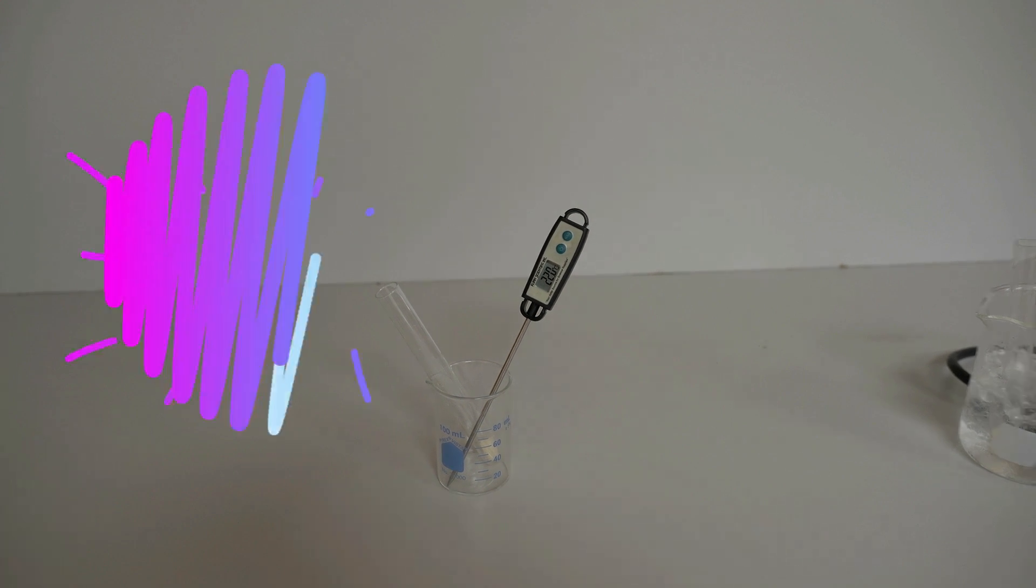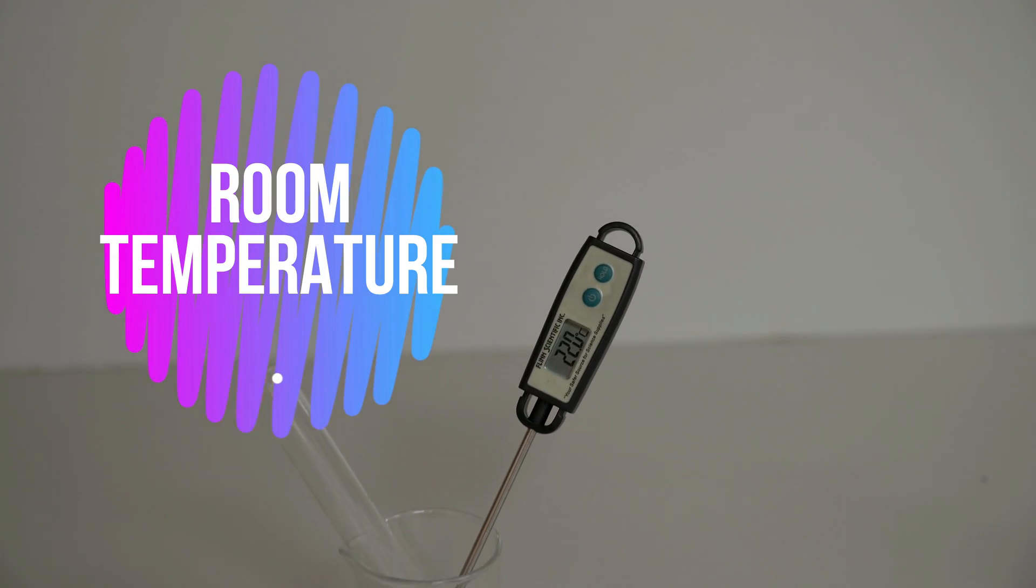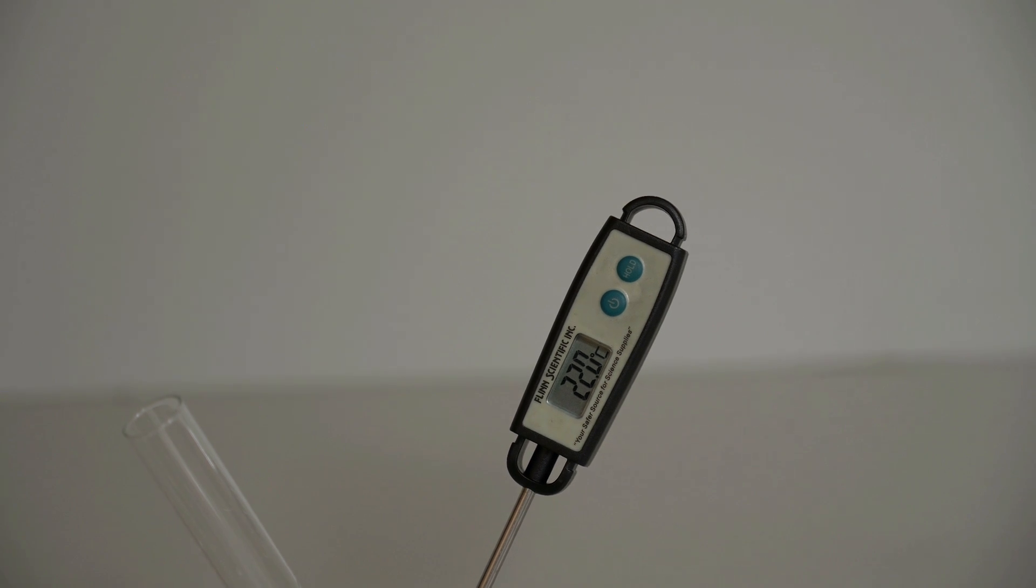Okay, so moving on to room temperature. We can see here the room temperature one has balanced out at 22.0 degrees Celsius.